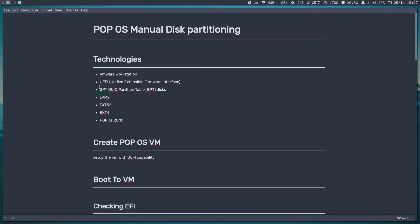The technologies I'm using: VMware Workstation as the virtualization environment, UEFI as firmware (a replacement for BIOS), GPT as the partitioning table (a replacement for MBR), LVM2 as the logical volume manager, and two file systems — FAT32 and ext4. I have Pop OS as an ISO image file.